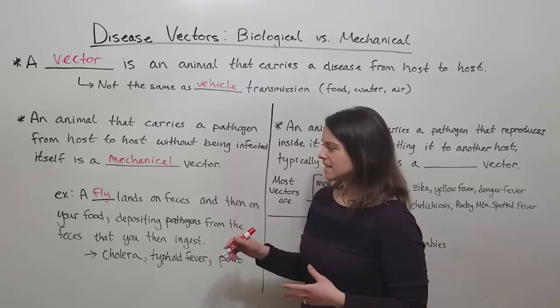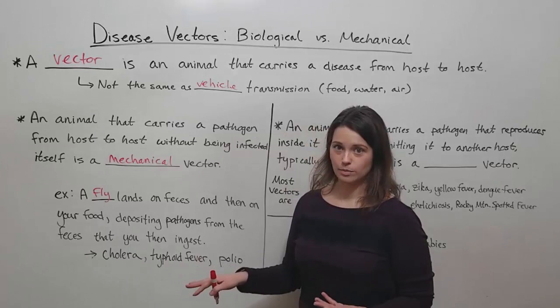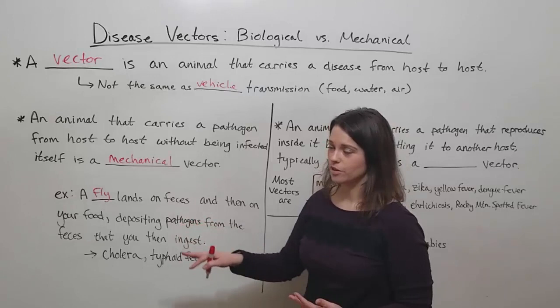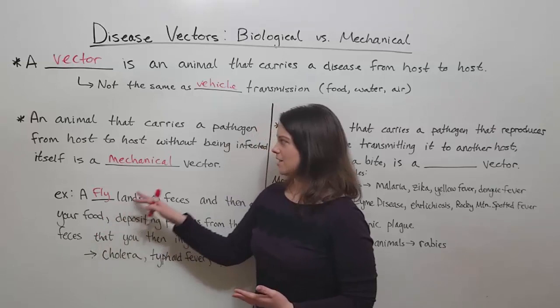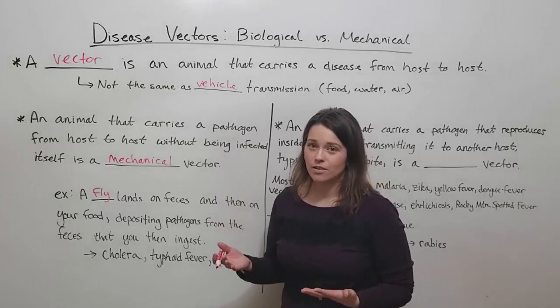Some diseases that spread this way include cholera, typhoid fever, and even polio. Cholera and typhoid fever are caused by bacteria, while polio is caused by a virus. So bacteria are not the only kinds of pathogens that can be carried from person to person by something like a housefly. The fly itself is not being infected — it just picks up pathogens on fecal matter that attaches to its legs, then deposits that matter onto somebody's food. That's a mechanical vector.